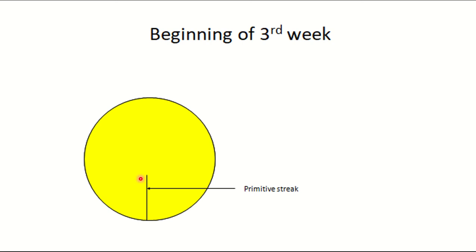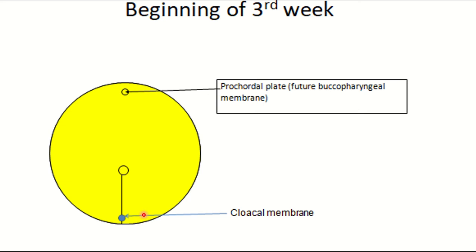Most of the new cells move forward and laterally, while fewer cells go laterally and backwards, forming an elevation known as the primitive node. Two membranes also develop: the prochordal plate — also called the precordal plate, buccopharyngeal membrane, or oropharyngeal membrane — where the epiblast is tightly bound with the hypoblast, and upon rupture forms the future oral cavity.